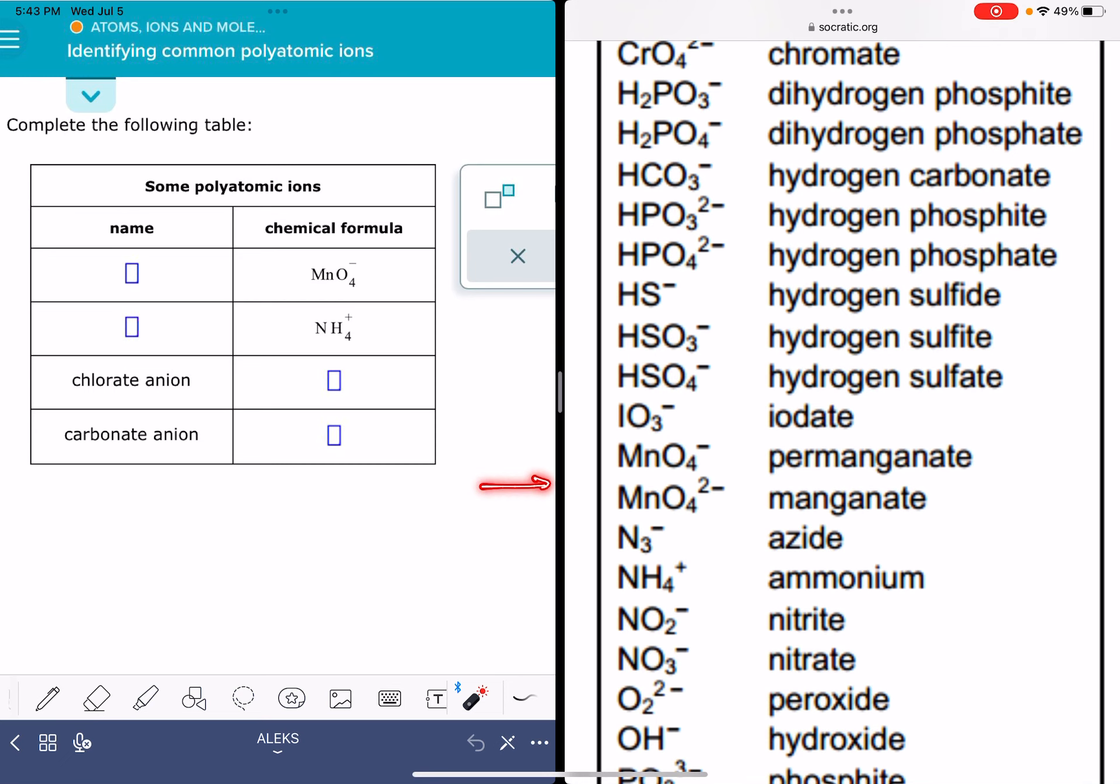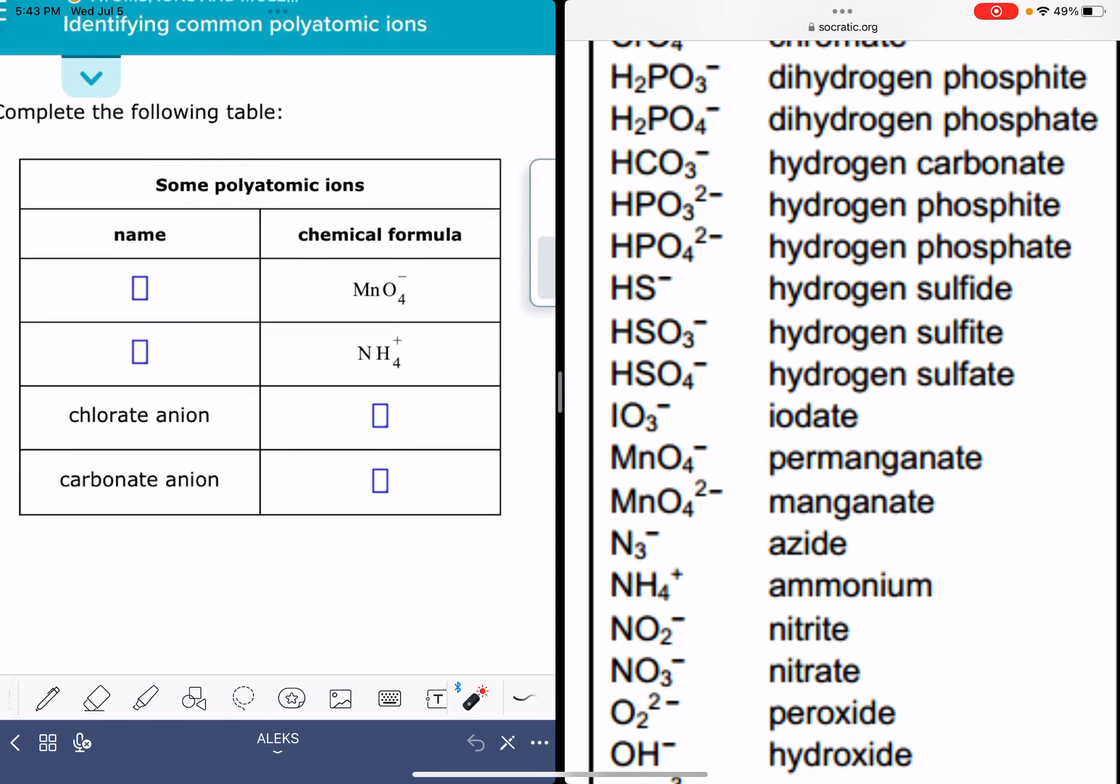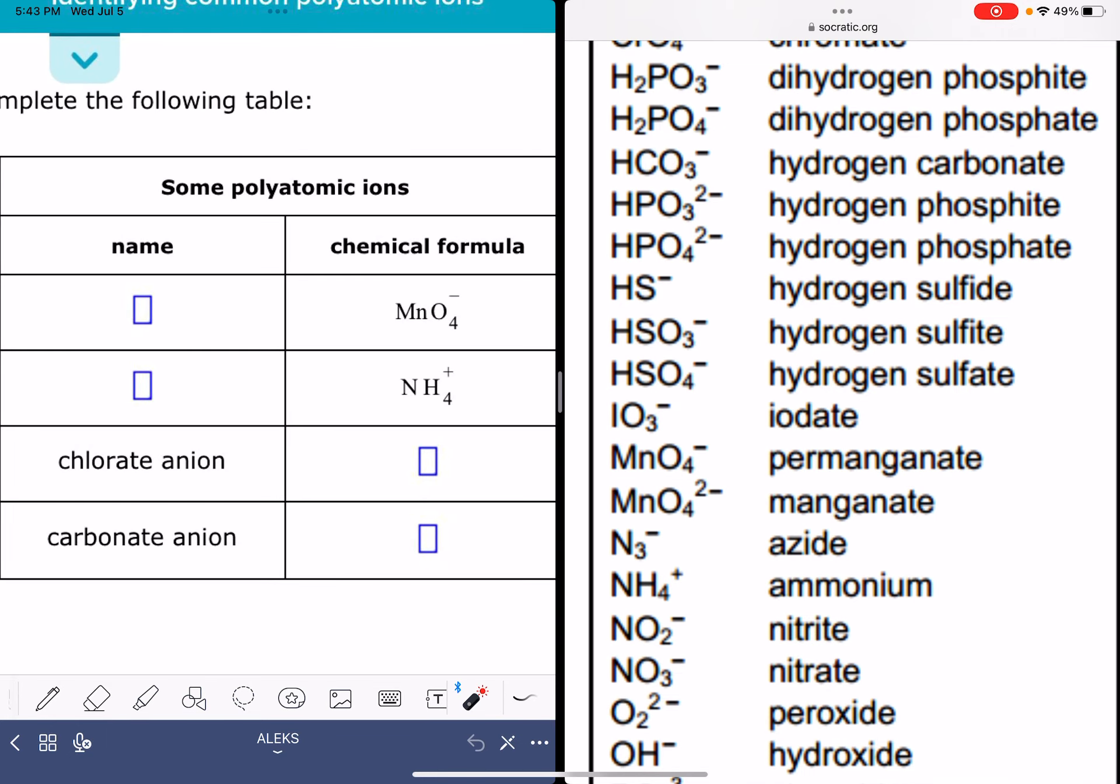Notice that there are two very similar polyatomic ions. So you do need to pay quite a bit of good attention to the actual formula. The one that I'm looking at is permanganate.